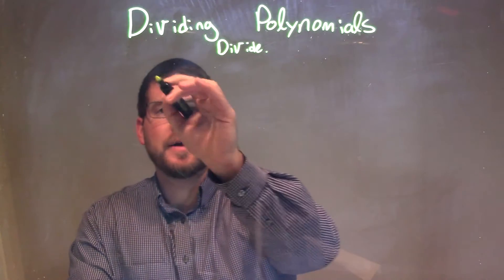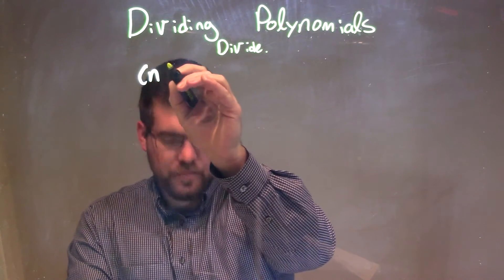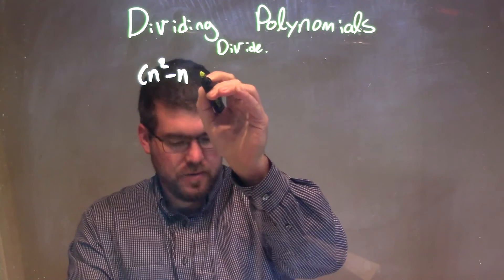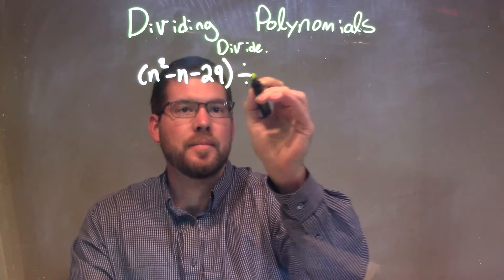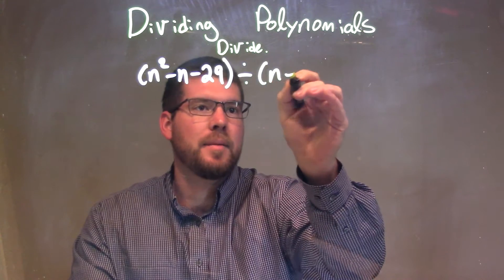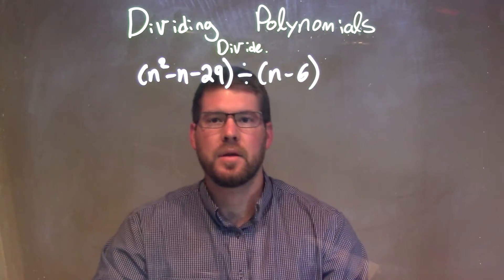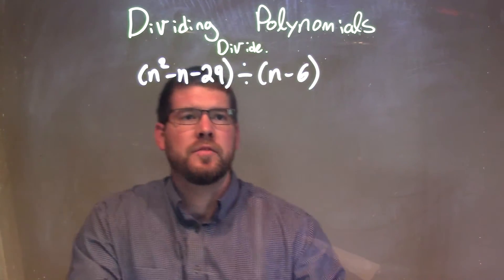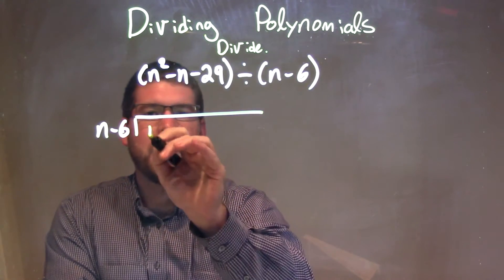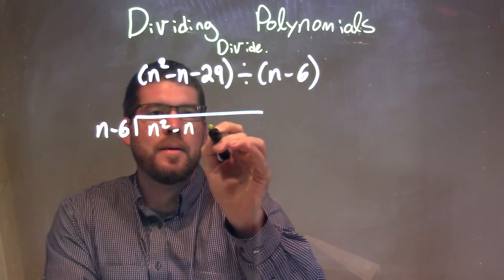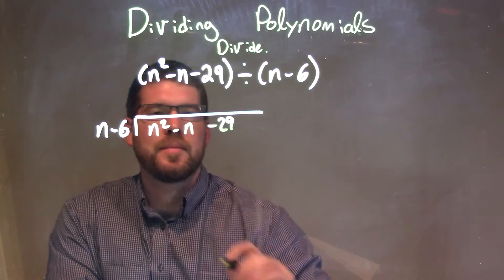If I was given this polynomial to divide: n squared minus n minus 29 divided by n minus 6, what we're going to do is our long division here. I'm going to take my n minus 6 and see how it can go into n squared minus n minus 29.